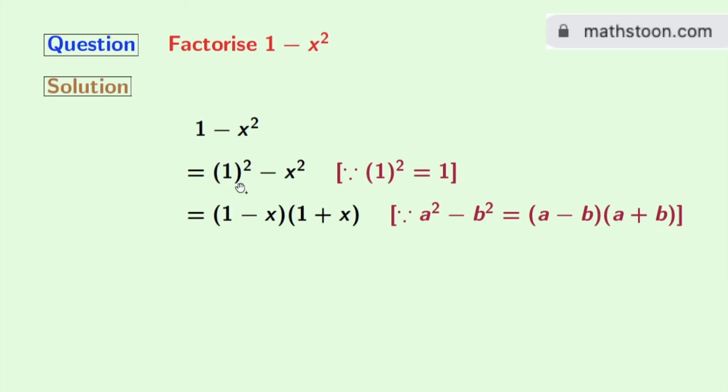Applying that we get 1 square minus x square is equal to 1 minus x times 1 plus x. Now as we cannot factorize further,